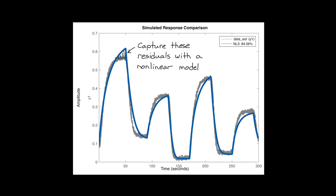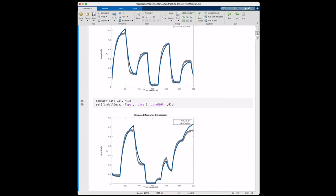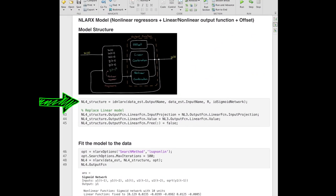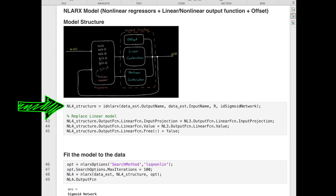If we go back to MATLAB, this is exactly what I try here. I'm creating a non-linear model structure that includes a linear portion, an offset, non-linear regressors, and a non-linear output function. In this case, I'm using a sigmoid network to capture those non-linearities. But to be honest, this choice of networks was a bit of a guess. If this doesn't work out, it would be worthwhile to try a Gaussian process or wavelets or something else. Again, trial and error.